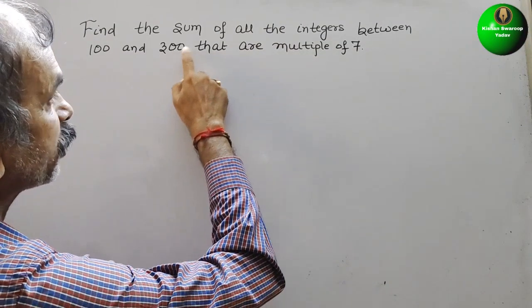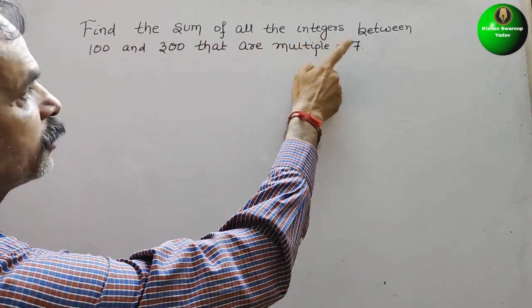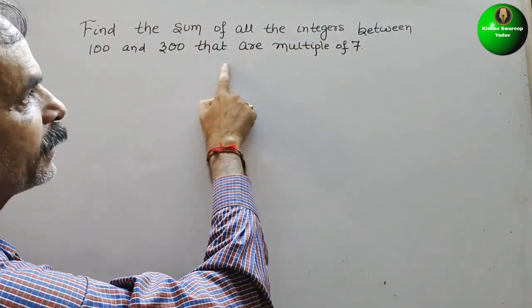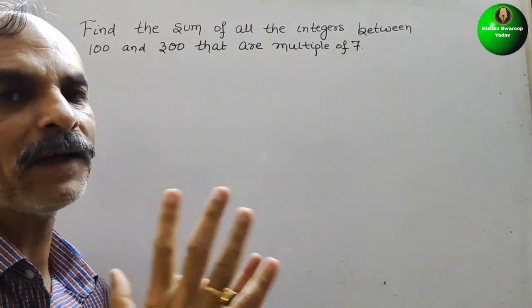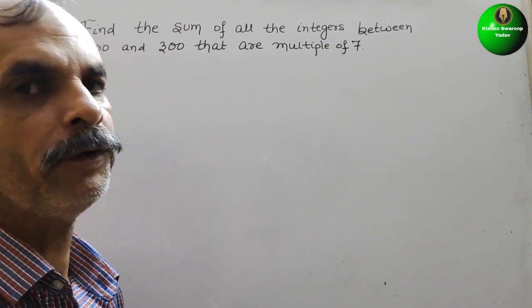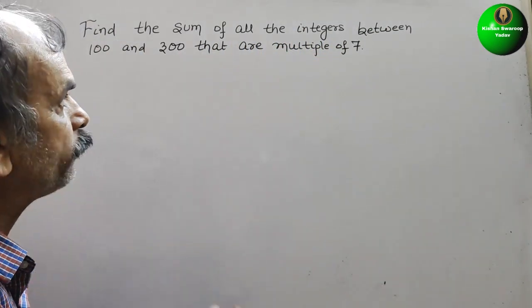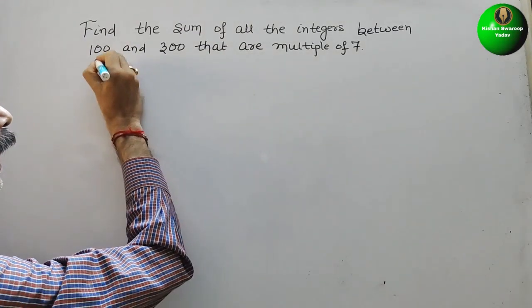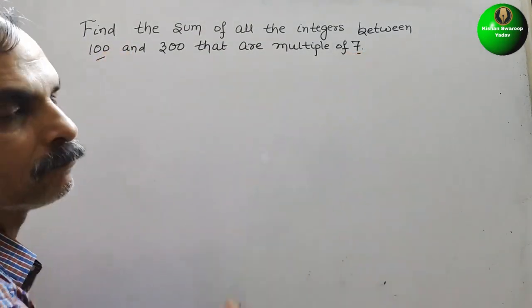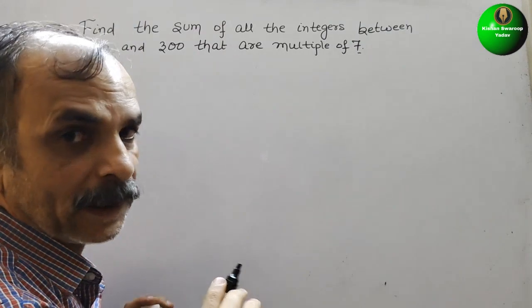Your question is find the sum of all the integers between 100 and 300 that are multiple of 7. How we will do it? So first what we will do, just we will divide 100 by 7, so what we will get see that.